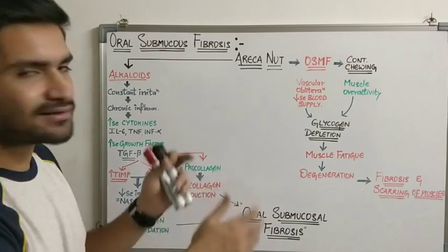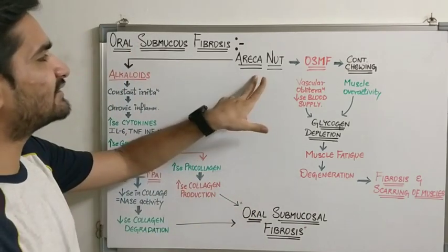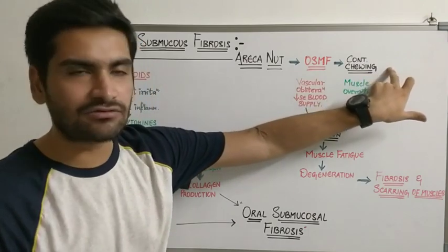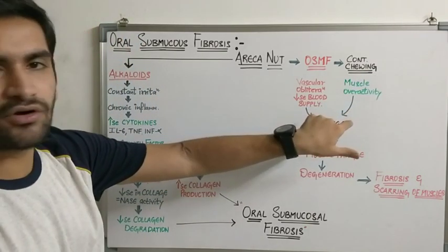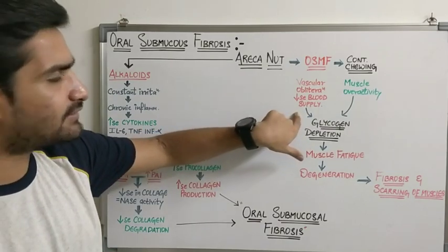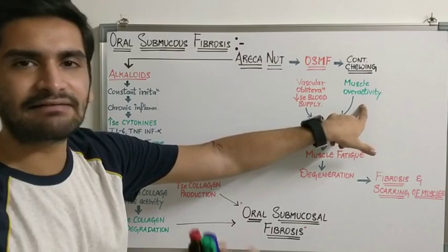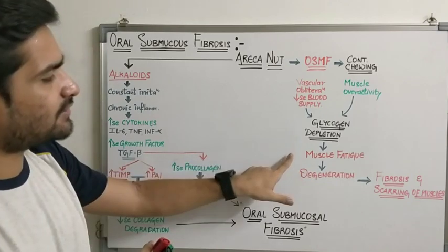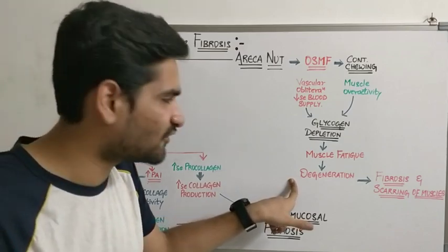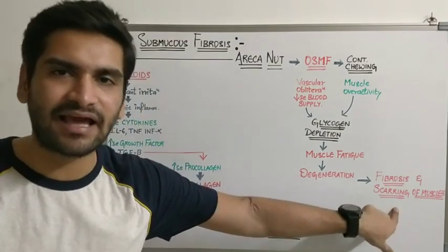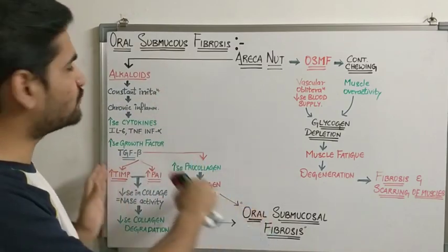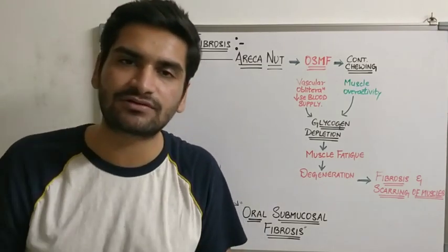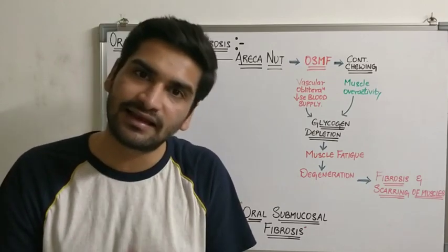Additionally, in a patient already having OSMF who continues chewing betel: there is vascular obliteration and decreased blood supply, and on the other side muscular overactivity leads to depletion of glycogen, causing muscle fatigue, degeneration of muscle, and ultimately fibrosis and scarring of muscle. This is the main pathway to remember — from alkaloids to oral submucosal fibrosis.